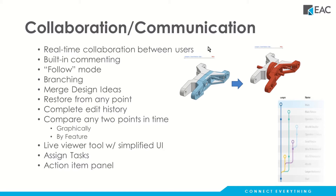We also integrate with a lot of other software out there, some cloud-based, some not. I want to talk about real-time collaboration between users. People say, how can you have two people working on the same thing at the same time? That argument comes up because no one else can do that. No one can divide up their kernel and allow multiple people to access the same data simultaneously. But Onshape can.